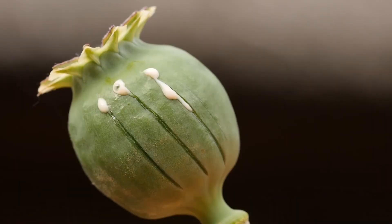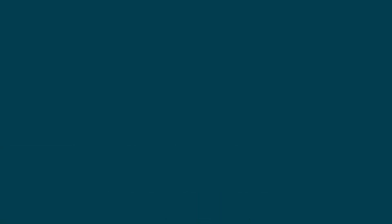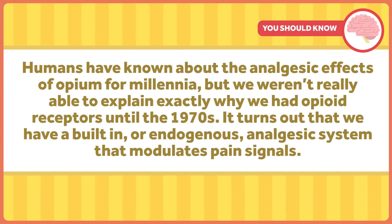The end result? Less pain. But why do our nerves have receptors that respond to a compound that diminishes pain? It doesn't really make sense that mammals would evolve a specific receptor for the sap of the poppy flower. Humans have known about the analgesic effects of opium for millennia, but we wouldn't really be able to explain exactly why we had opioid receptors until the 1970s. It turns out that we have a built-in, or endogenous, analgesic system that modulates pain signals.